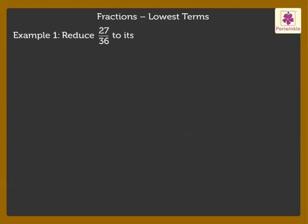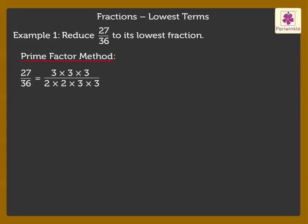Example 1: Let us reduce it using the prime factor method. Firstly, list the prime factors of the numerator and the denominator. Now, cancel the factors common to the numerator and the denominator. The required answer is 3 upon 2 into 2, which is equal to 3 upon 4.